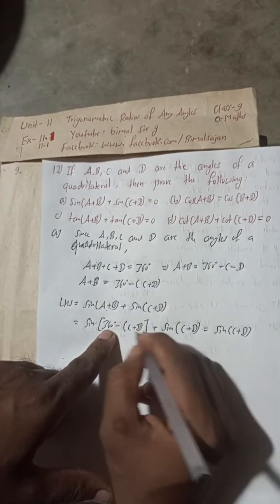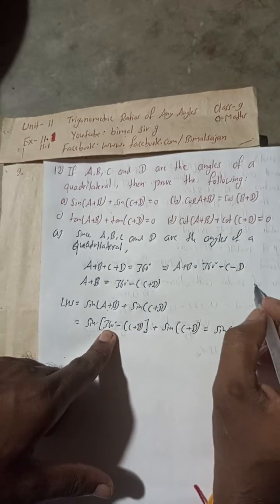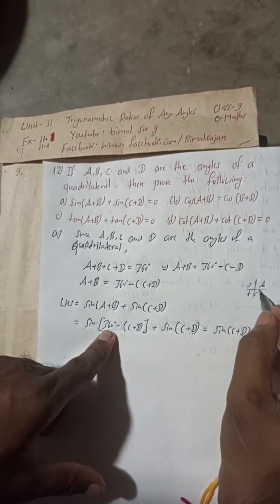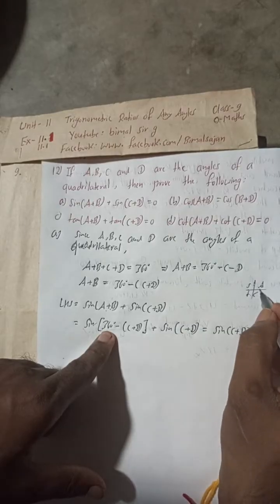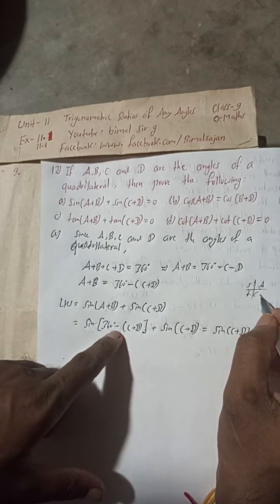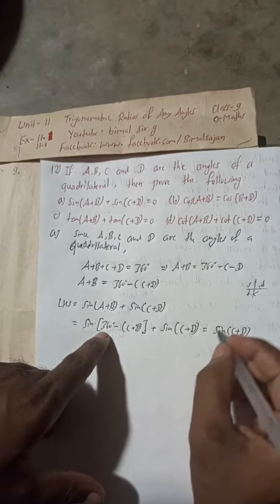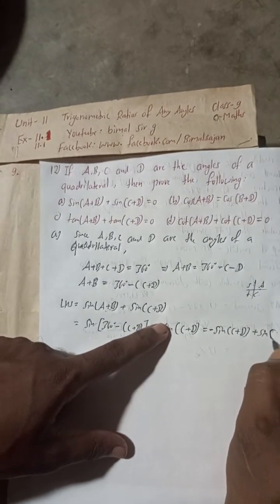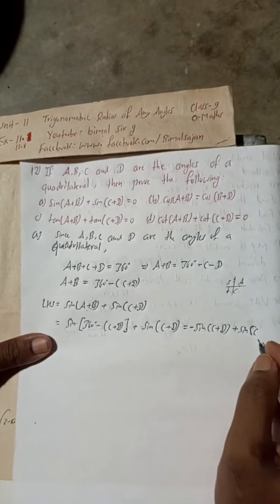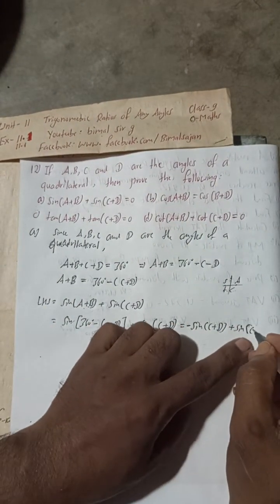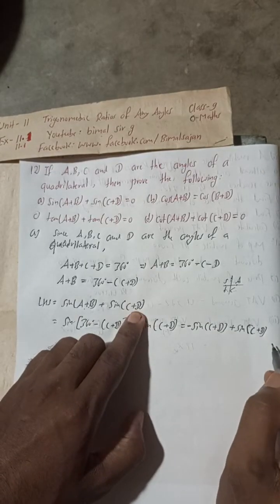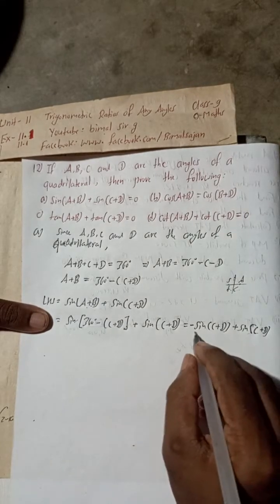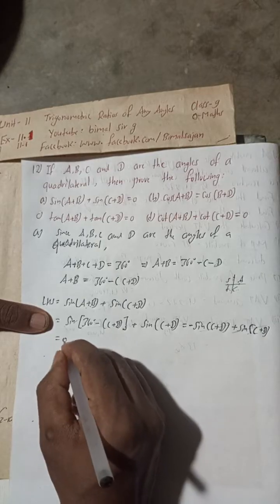Now, for sin(360° − θ): the CAST rule tells us 360° − θ lies in the fourth quadrant, where only cos is positive, so sin is negative. Therefore sin(360° − (C+D)) = −sin(C+D). So LHS = −sin(C+D) + sin(C+D) = 0 = RHS. Proved.